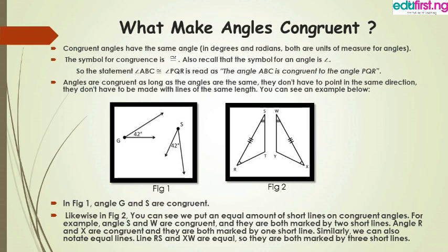They are not pointing to the same direction, so it is not necessary that they point the same way. Here we have two triangles: triangle RSC and triangle YWX. Angle S in triangle RSC and angle W in triangle YWX are both marked by two short lines, which means angle S and angle W are congruent.